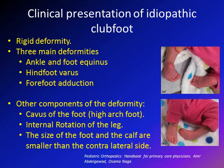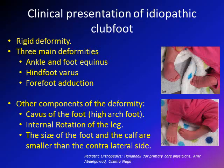There are three additional components: cavus of the foot (high arch), internal rotation of the whole leg, and in unilateral cases, the foot and calf on the affected side will be smaller than the other side.